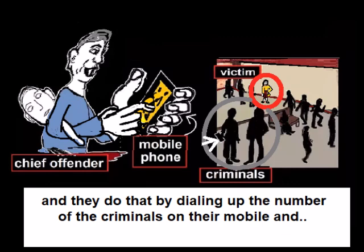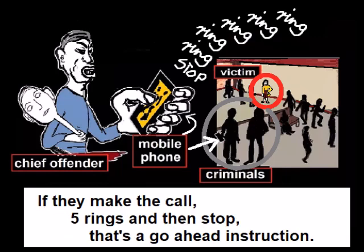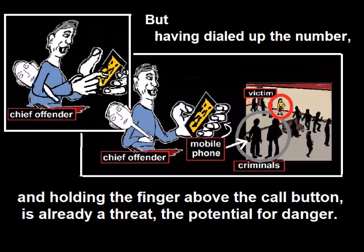They do that by dialing up the number of the criminals on their mobile phone and having their finger over the call button. They don't call. If they make the call — five rings and then stop — that's a go-ahead instruction. But having dialed up the number and holding the finger above the call button is already a threat: the potential for danger.